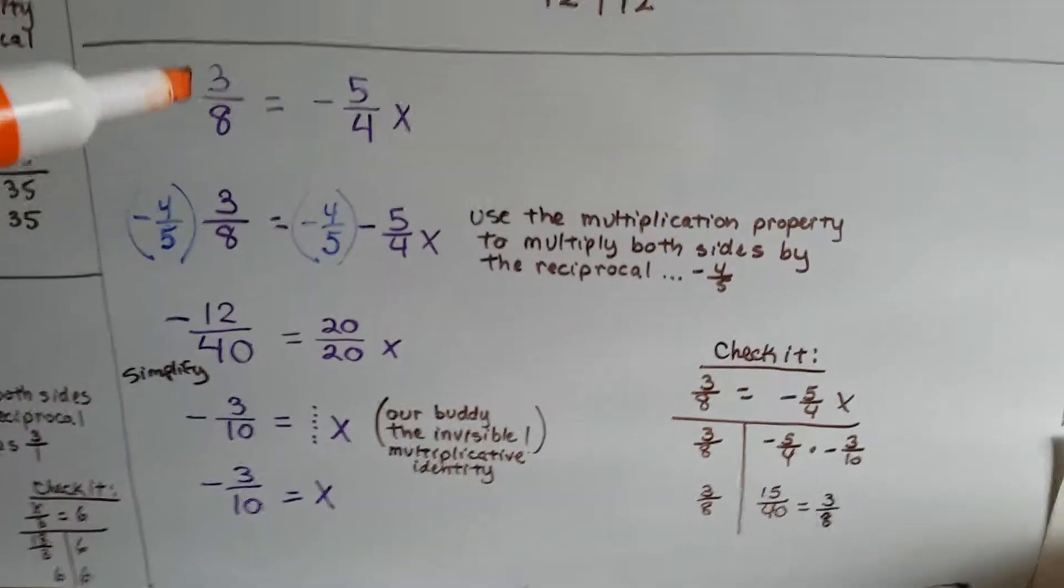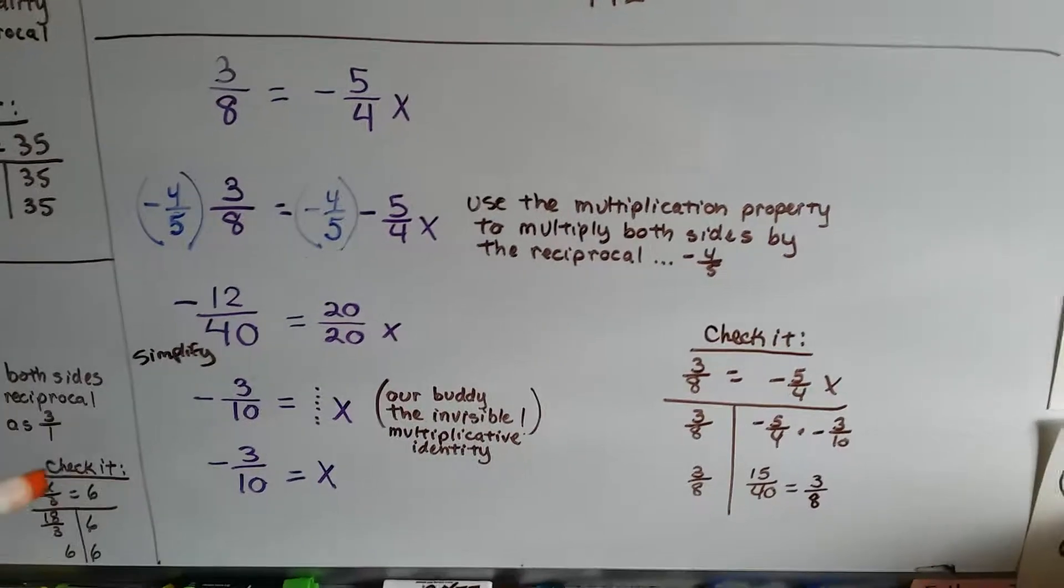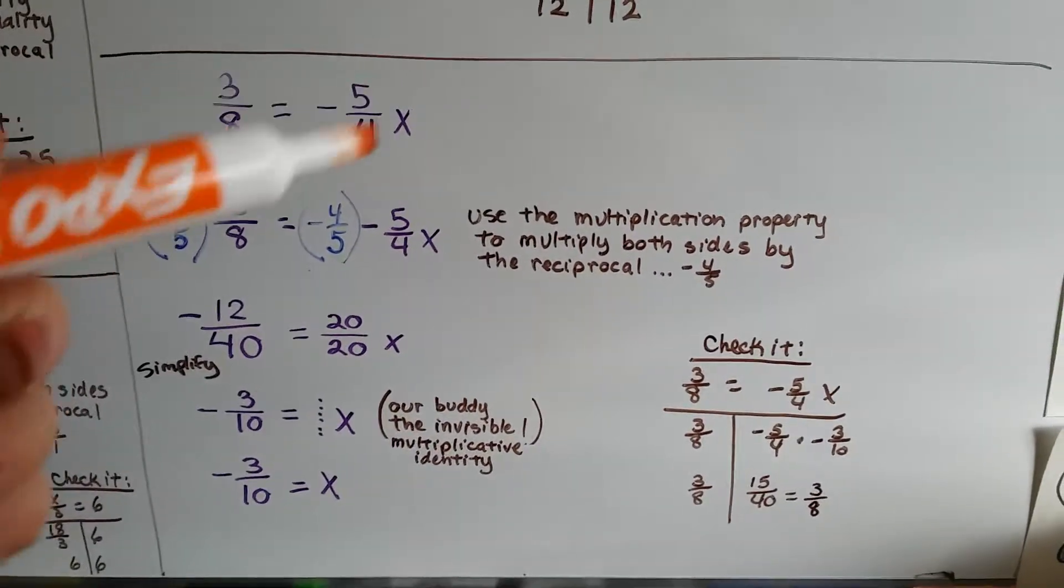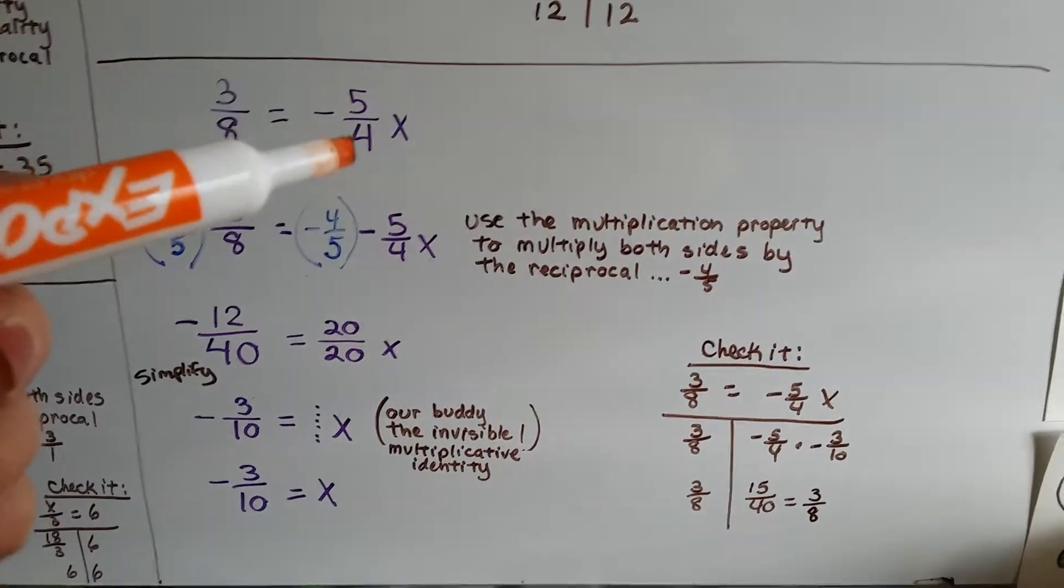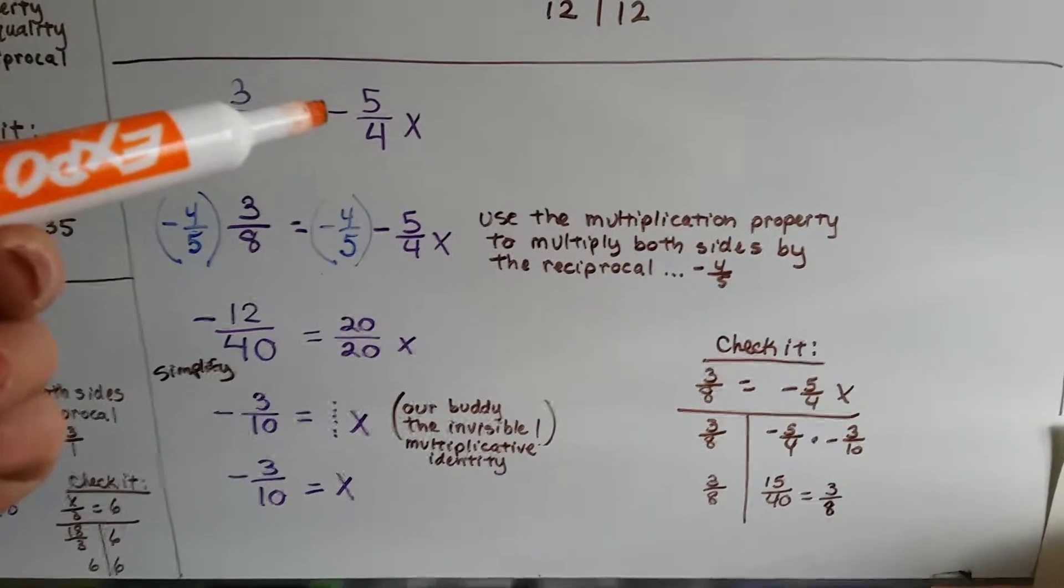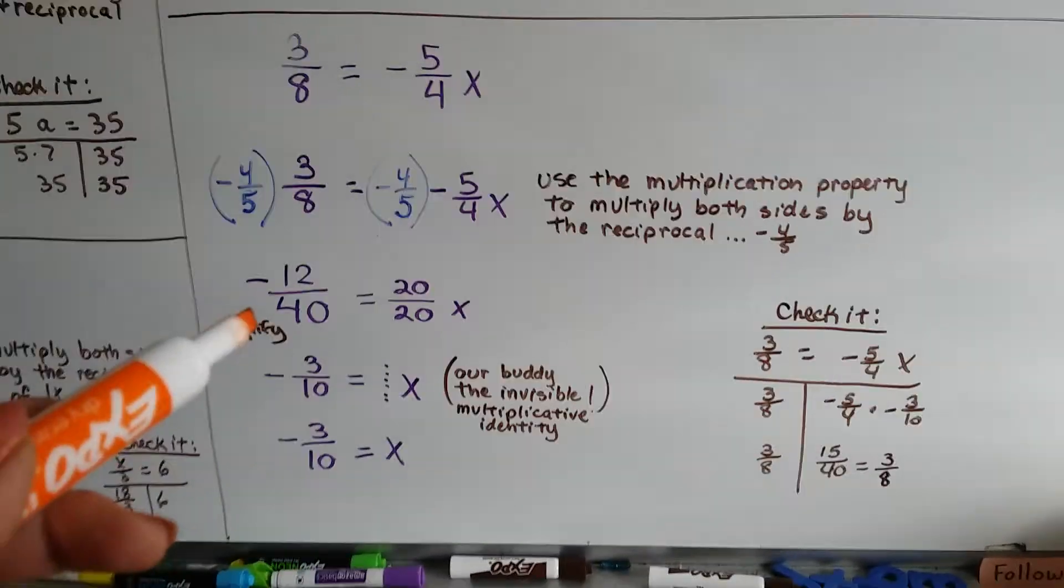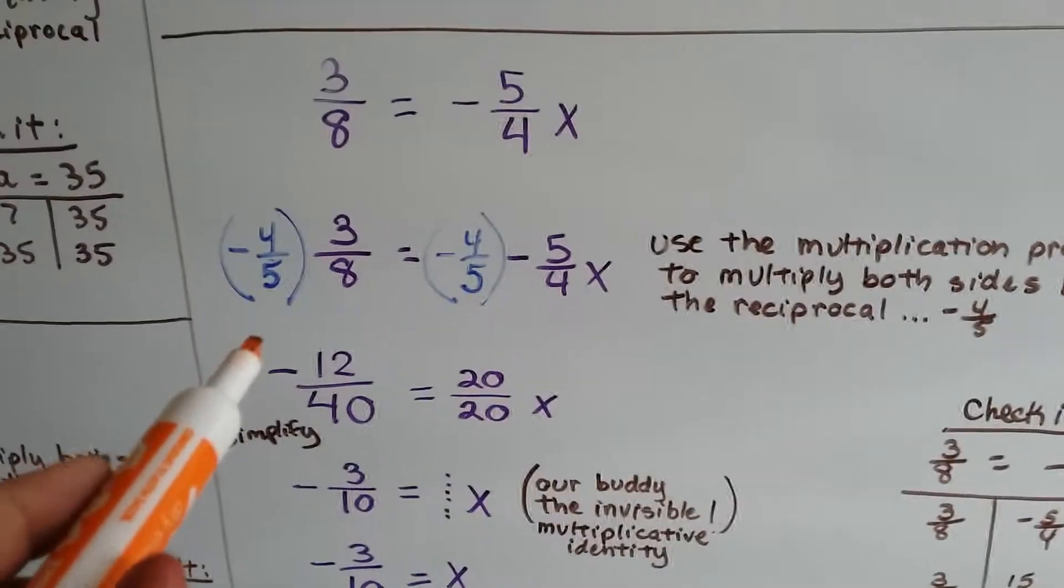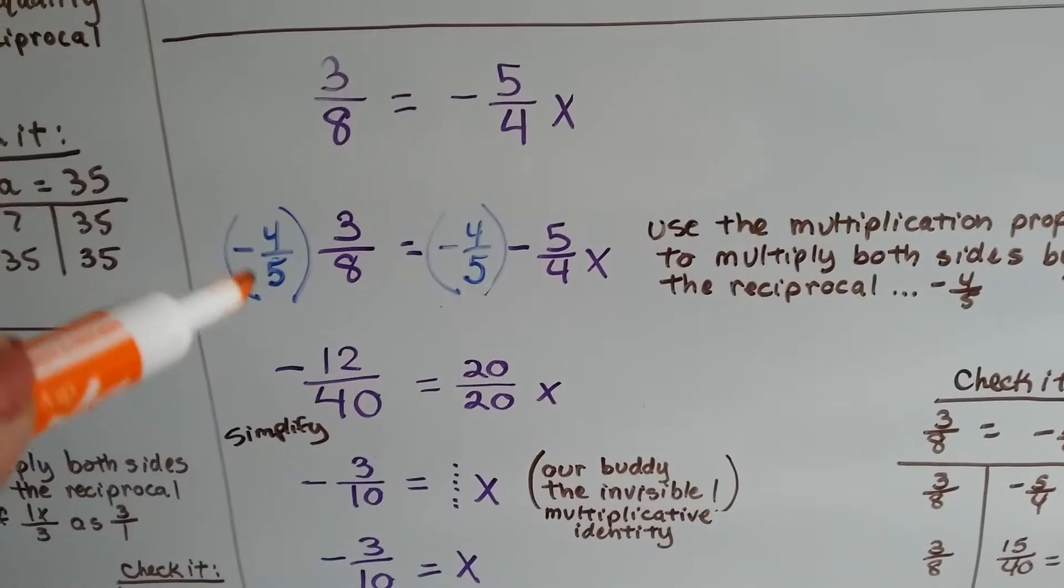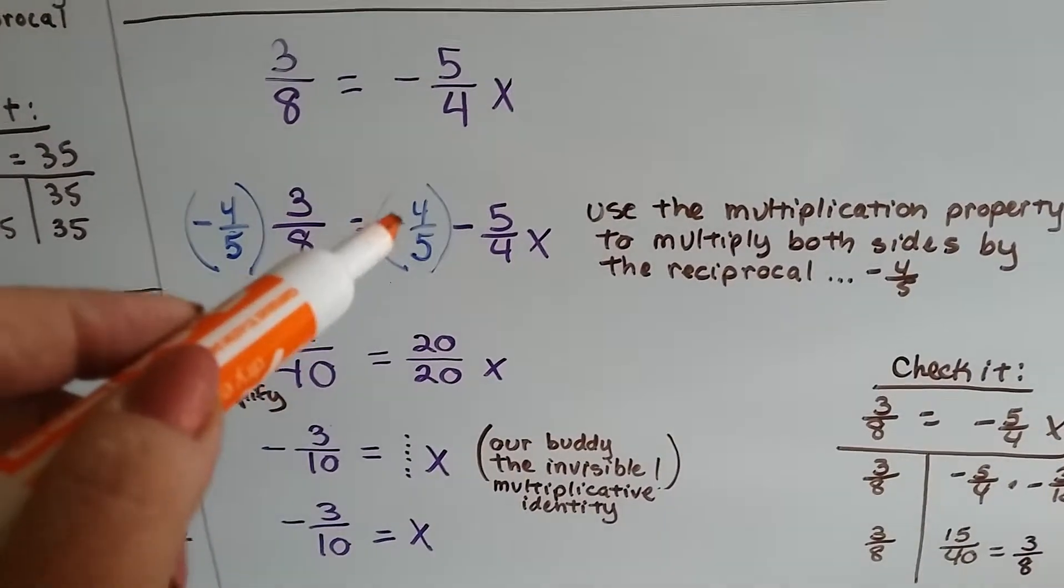Let's take a look at this one. We've got some fractions. We've got 3 eighths equals negative 5 fourths x. We need to get rid of this negative 5 fourths so the x is by itself. So we use the multiplication property to multiply both sides by the reciprocal, and flipping it over, numerator and denominator, we get a negative 4 fifths. That negative sign stays. When you do a reciprocal of a negative, it keeps the negative. We don't get rid of it. The reciprocal has nothing to do with it being positive or negative. So we keep the negative. Now we're multiplying both sides of this equation by negative 4 fifths, and 4 times 3 is 12 and 5 times 8 is 40, and we bring our negative sign down.